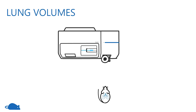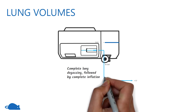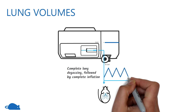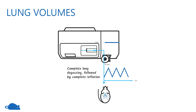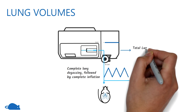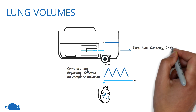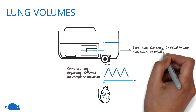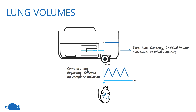In the lung volumes measurement, the lungs are completely degassed after ventilating with pure oxygen and then re-inflated back to total lung capacity. The flexiVent then calculates the total lung capacity, residual volume, and functional residual capacity.